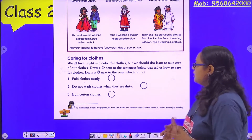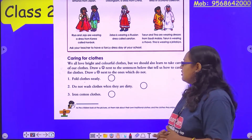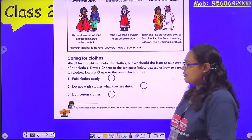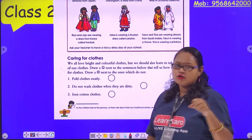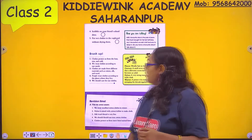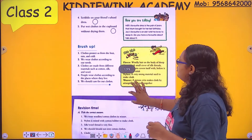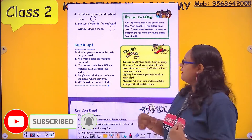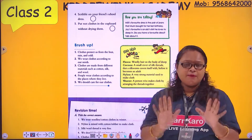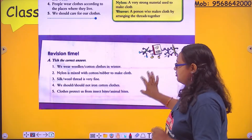Now, caring for clothes. We all love bright and colorful clothes, but we should also learn to take care of them. Fold clothes neatly. Wash them when they are dirty. Iron cotton clothes, but not too much — ironing too much will damage them. Never scribble on your friend's school dress. Dry clothes after washing, then fold them neatly and keep them in the cupboard.